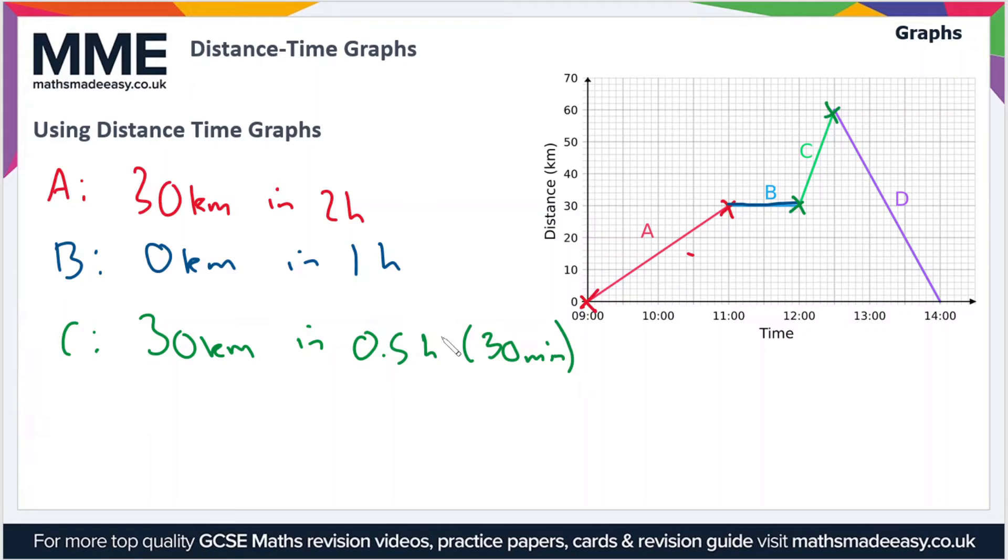Finally, if we move on to section D, we're going back to the start point now since it's a negative gradient. We're going from a distance of 60 kilometers at the top to zero, so that's 60 kilometers traveled. The time span is three big squares, so that's 1.5 hours or 1 hour 30 minutes.